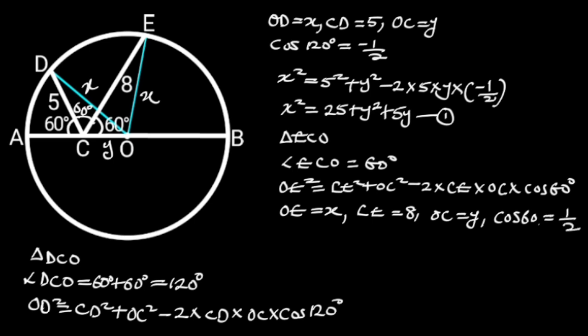Substituting these values in the above formula will give us X squared is equal to 8 squared plus Y squared minus 2 times 8 times Y times 1 over 2.